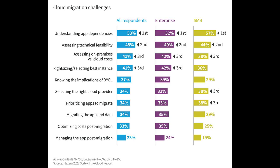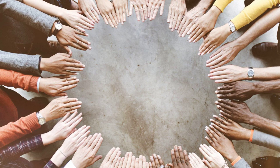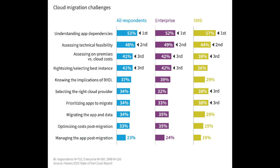To understand the role of migration in cultural history, we must first define what culture is. Culture encompasses the beliefs, customs, arts, and social institutions of a particular group of people. It is shaped by various factors, including geography, history, and most importantly, the movement of people.